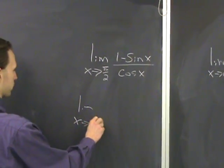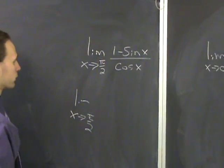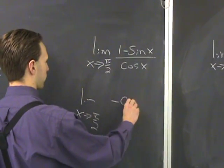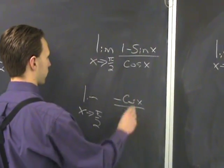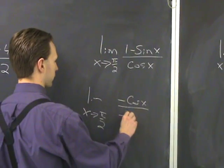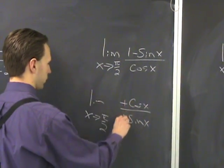Limit as x goes to π over 2. The derivative of the top and bottom, so it's going to be minus cosine x, divided by the derivative of the cosine is minus sine x. The negatives cancel.